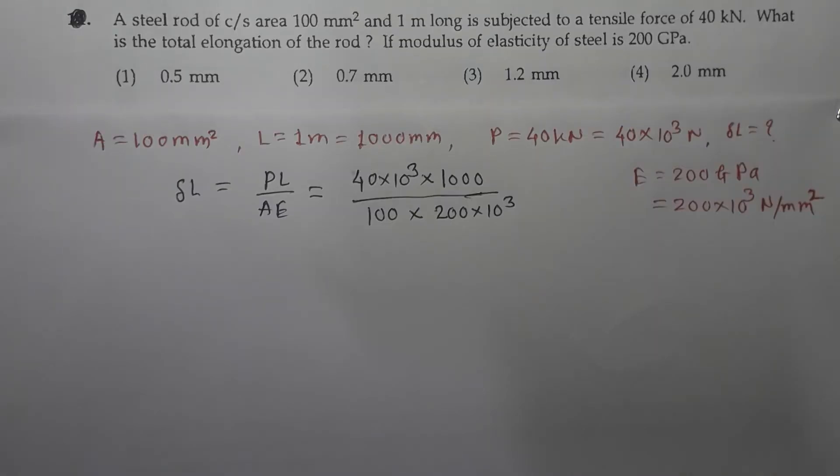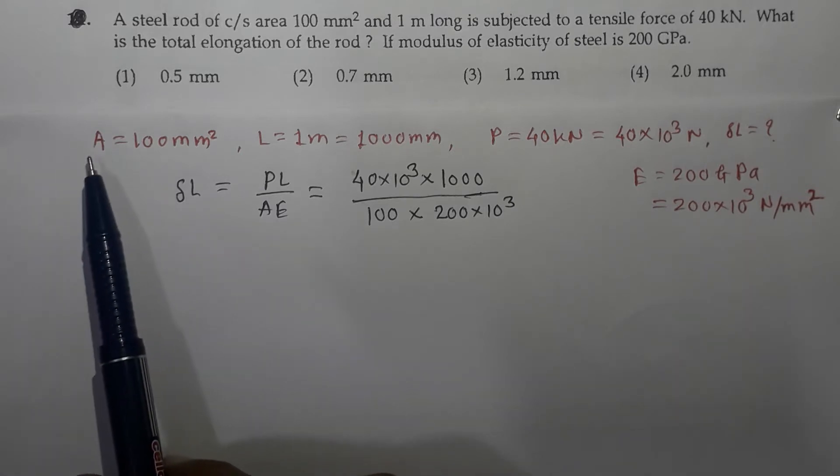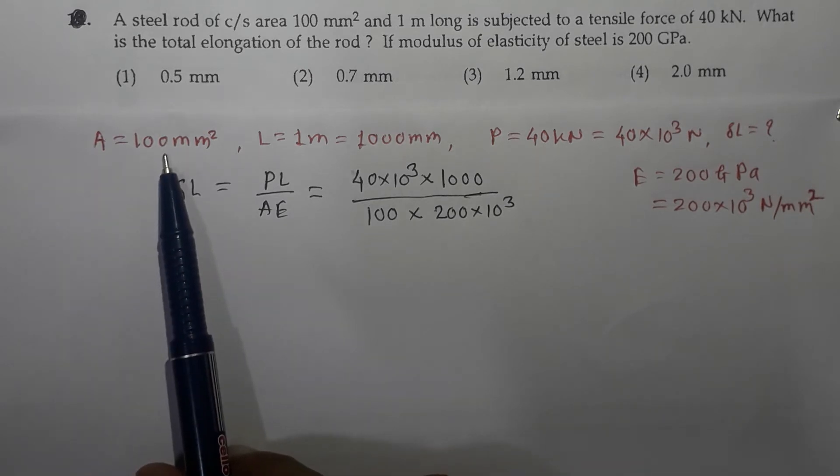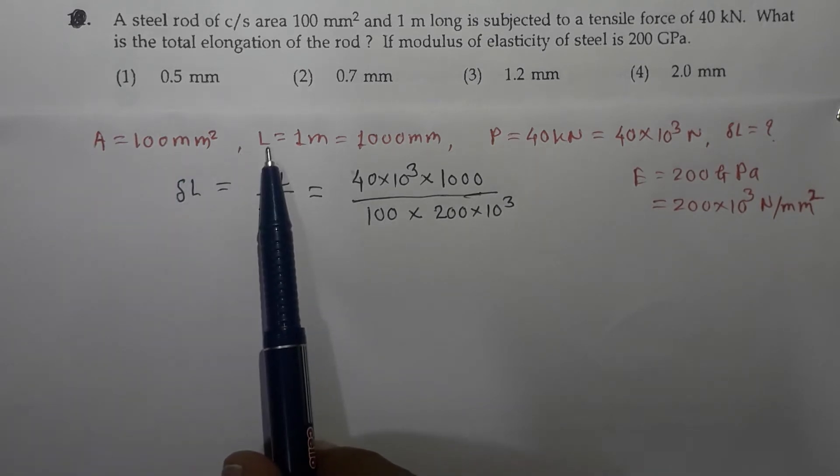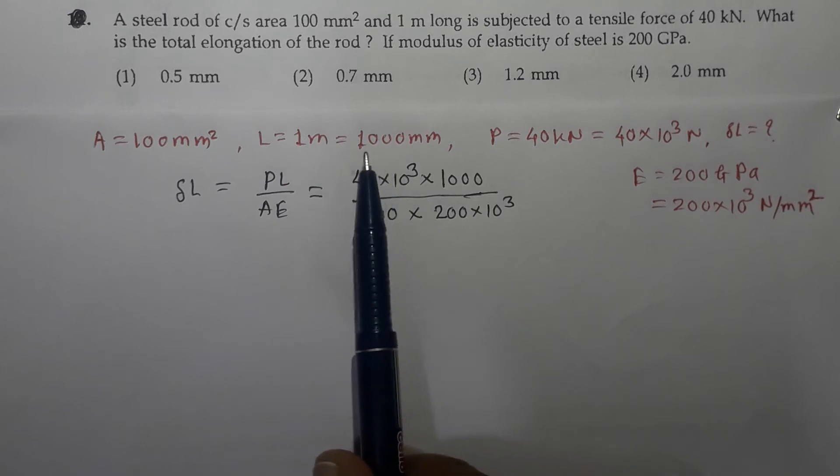Question number two: a steel rod of cross sectional area 100 mm square and one meter long is subjected to a tensile force of 40 kilo Newton. What is the total elongation of the rod if modulus of elasticity of steel is 200 GPa? Now here in this question, the terms which are given are area A equals 100 mm square, length is given as 1 meter, which can be converted into mm as 1000 mm.